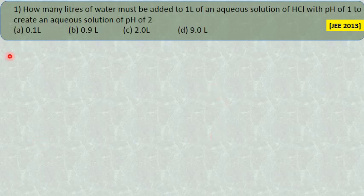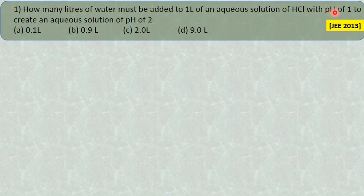Now, here in this video, I will tell you the simplest means of getting the answer for this type of questions. How many liters of water must be added to 1 liter of an acidic solution of HCl with pH of 1 to create an acidic solution of pH of 2.